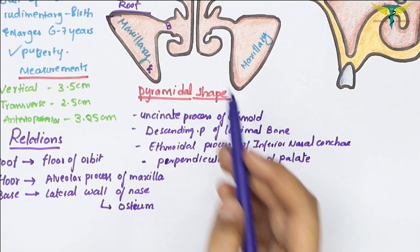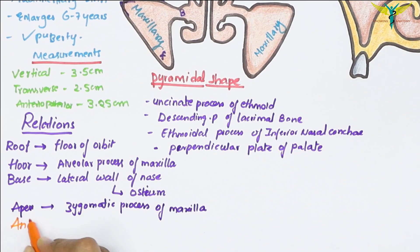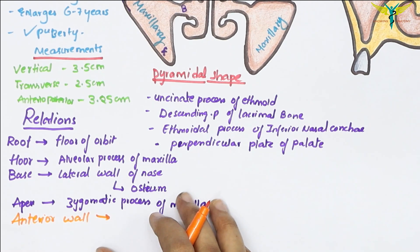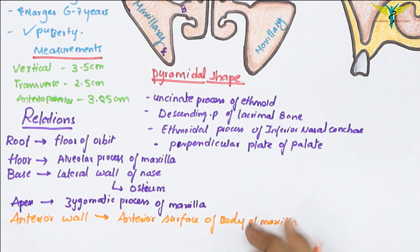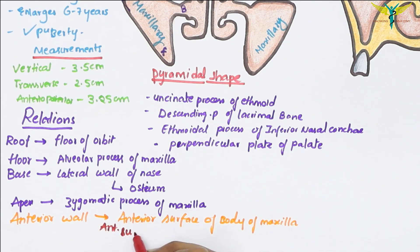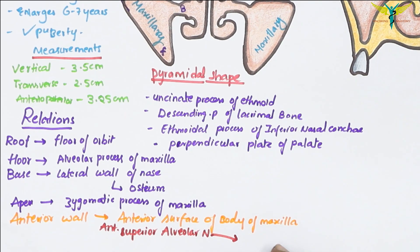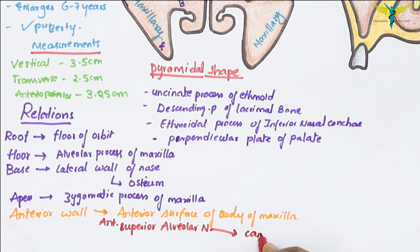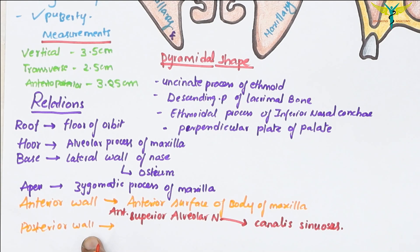The apex extends into the zygomatic process of the maxilla. The anterior wall of the maxillary sinus is formed by the anterior surface of the body of the maxilla and is related to the infraorbital plexus of nerves. Within the anterior surface of the body of the maxilla, the anterior superior alveolar nerve runs in a curved bony canal that is called the canalis sinuosus.